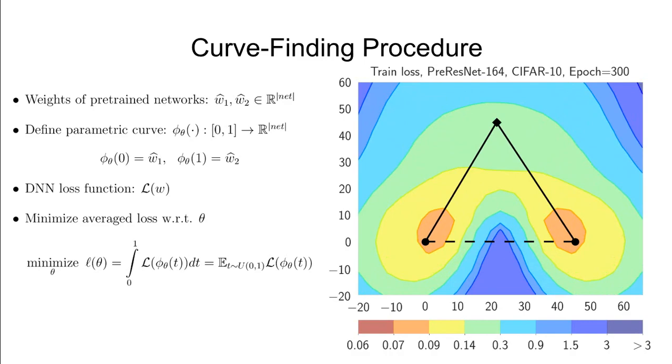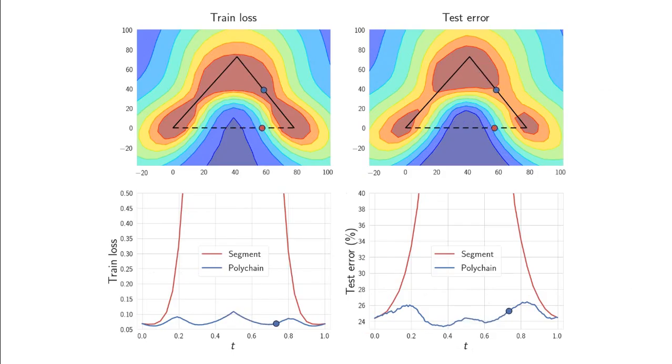In this slide, we visualize the training progress. As a result, we are able to find a curve over which there is consistently low train loss and test error. At the same time, train loss and test error become very high along the line segment connecting the same endpoints.